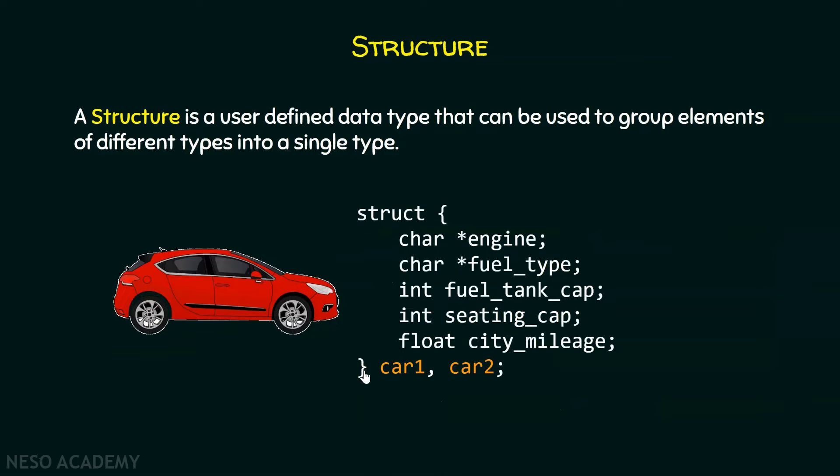For this purpose, we can declare a structure like this. Always remember that in order to define a structure, there must be a struct keyword over here. Then after that, we have these flower brackets. And within these flower brackets, we will group together all the types we want to group together. Then after that, we can declare the variables of this particular struct type.